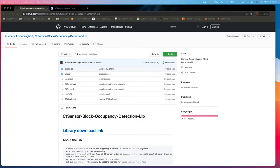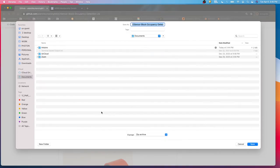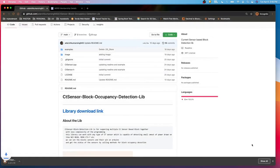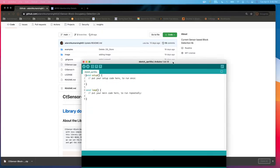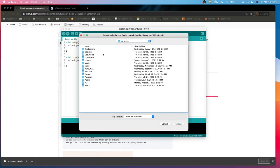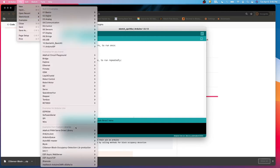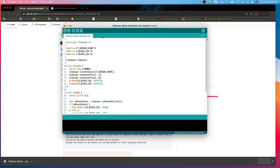Now we're going to download the library, install it in Arduino, and test it on the track. Let's download the library from the GitHub page. I downloaded it on my desktop Arduino. I'm going to open this Arduino, then go to Sketch, Include Library, Add ZIP File, Desktop, CT Sensor Block Occupancy. I've included that, and then I'll go to its samples, CT Sensor Block Occupancy Detection Library.